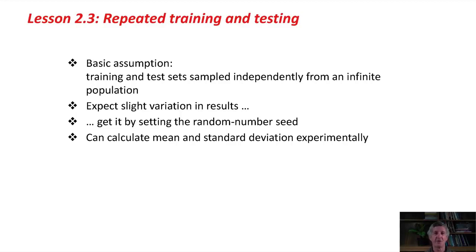Remember, the basic assumption is that training and test sets are sampled independently from an infinite population. You can estimate the variation in results by setting the random number seed and repeating the experiment to calculate the mean and standard deviation experimentally. Go and do the activity associated with this lesson. I'll see you in the next lesson. Bye.